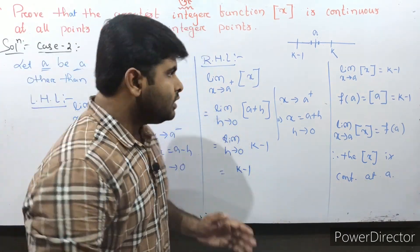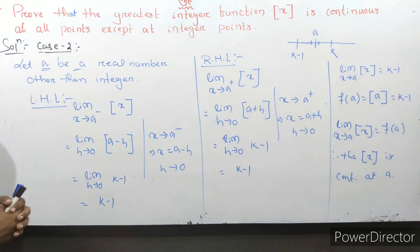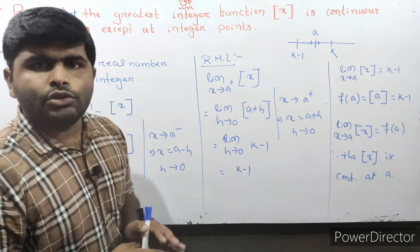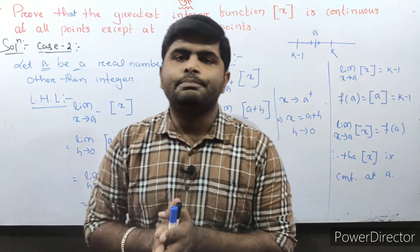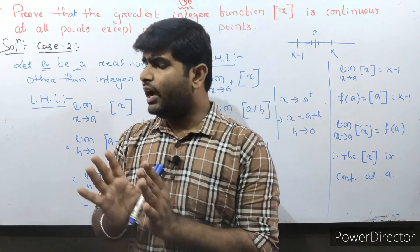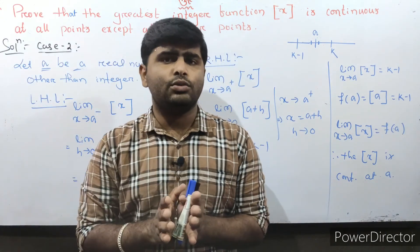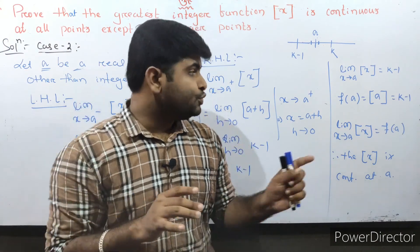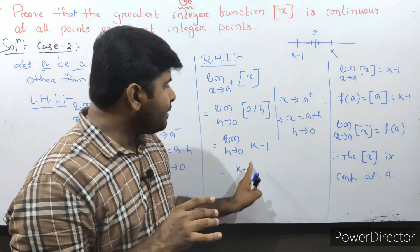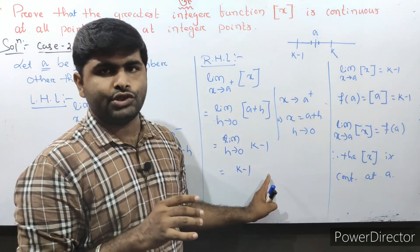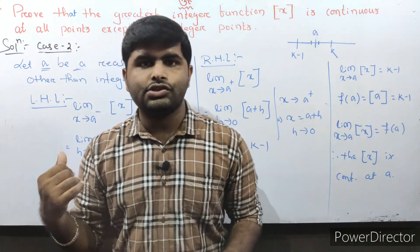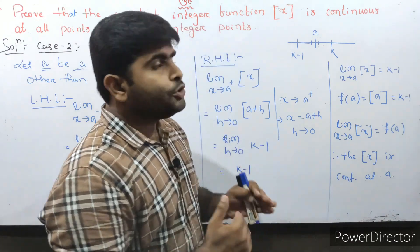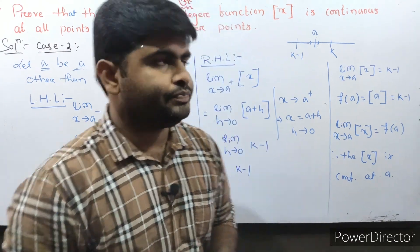So the greatest integer function is continuous at all points except integer points. That's all for this class. Thank you. See you in the next class.